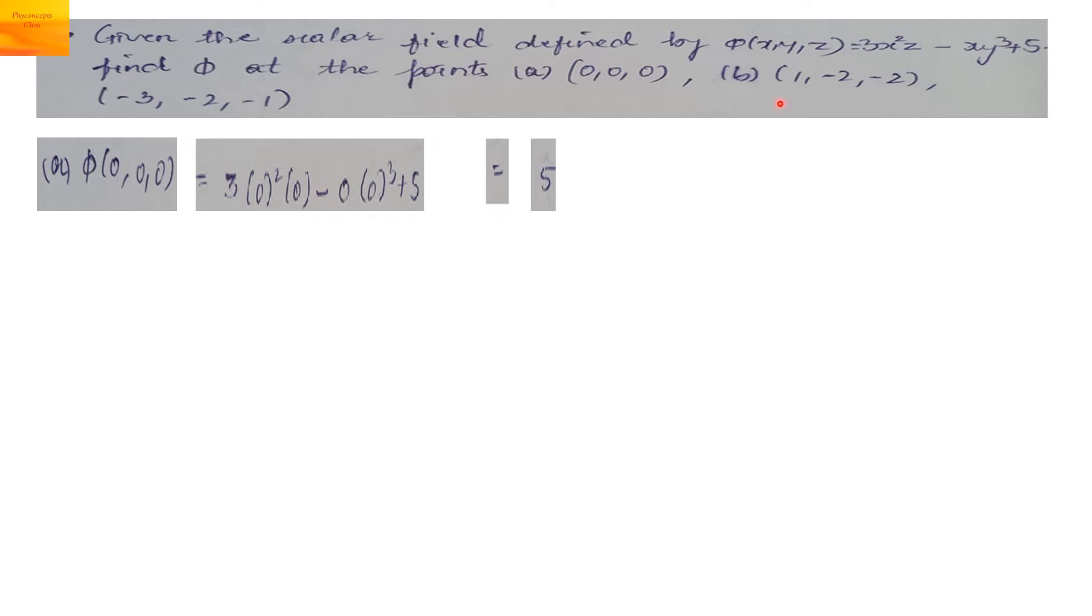Same way you can take another point which is represented by these coordinates 1, minus 2, minus 2. X is 1, Y is minus 2, Z is minus 2. We substitute this, and the answer comes as 7.